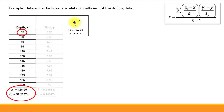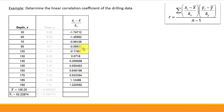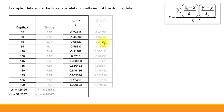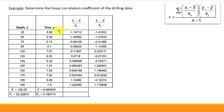We take each x-sub-i, subtract x-bar (the mean), and divide by s-sub-x (the standard deviation), and do that for all values. Then we repeat this process for the response variable y — taking each y value, subtracting y-bar, and dividing by s-sub-y. We do that for each individual value of the response variable.